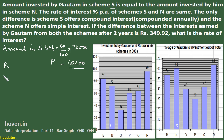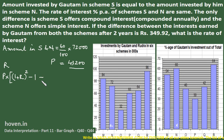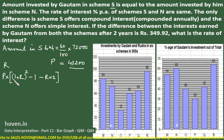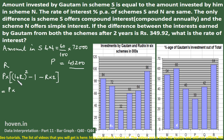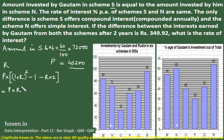Compound interest after 2 years = P × [(1 + r)² − 1]. Simple interest after 2 years = P × r × 2. Taking the difference: CI − SI = P × [r² + 2r − 2r] = P × r². So the difference simplifies to P × r².